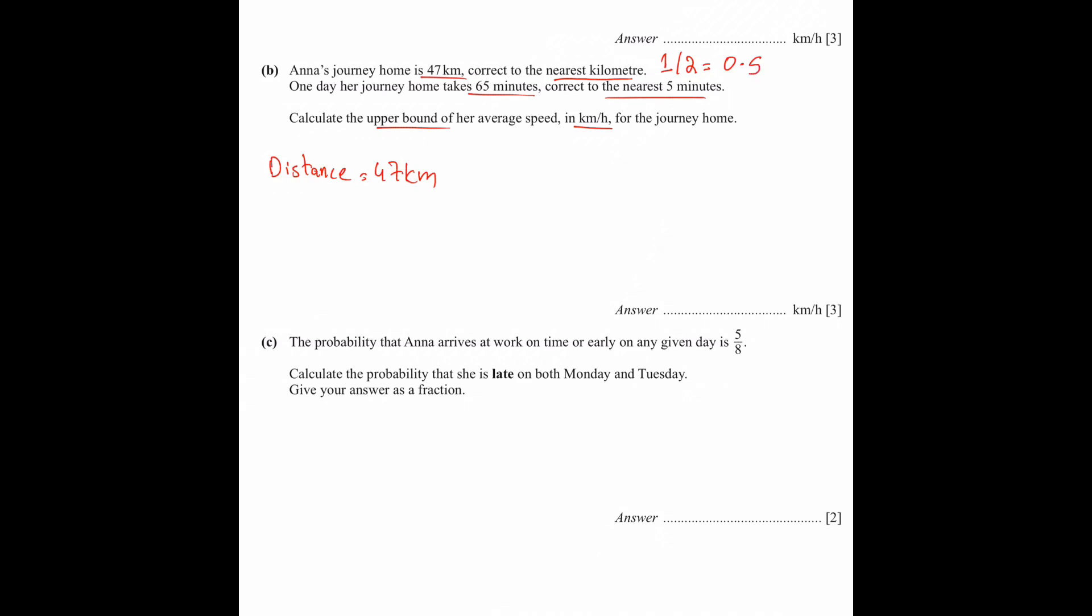Upper bound add and lower bound subtract. Now my advice to you is that wherever you have an upper bound or lower bound related question, you need to determine which bound to use based on what the question asks. So distance bounds are 47.5 km and 46.5 km.